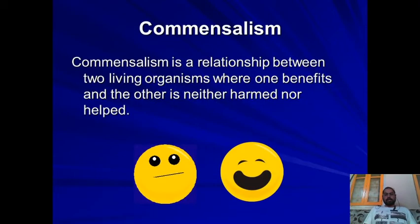The first type of interaction is called commensalism, where it is a relationship between two animals where one gets benefits and the other is neither harmed nor benefited. As you can see in the smileys here, one is very happy and smiling, and the second one is neither harmed nor benefited.